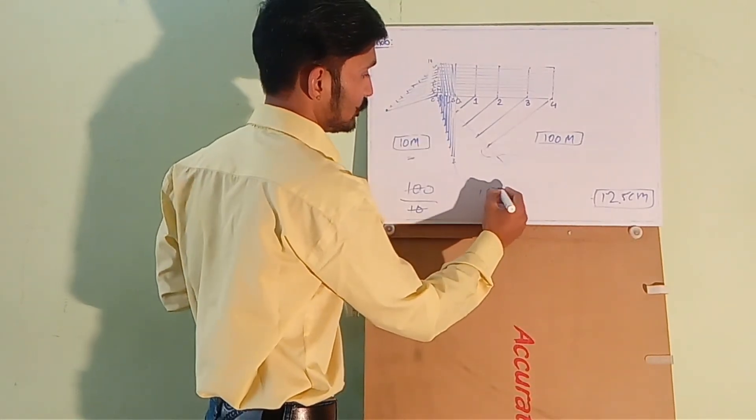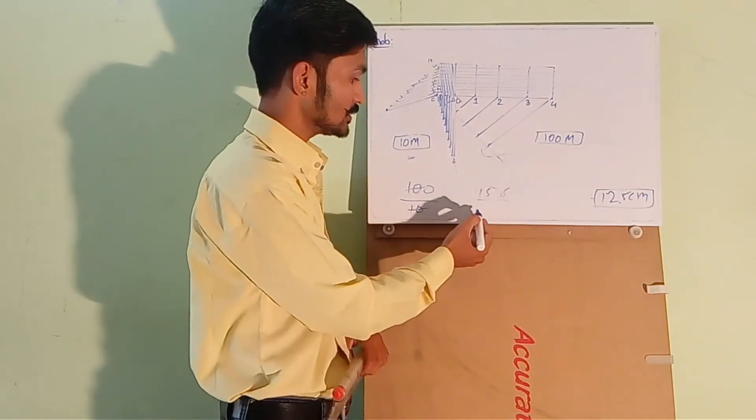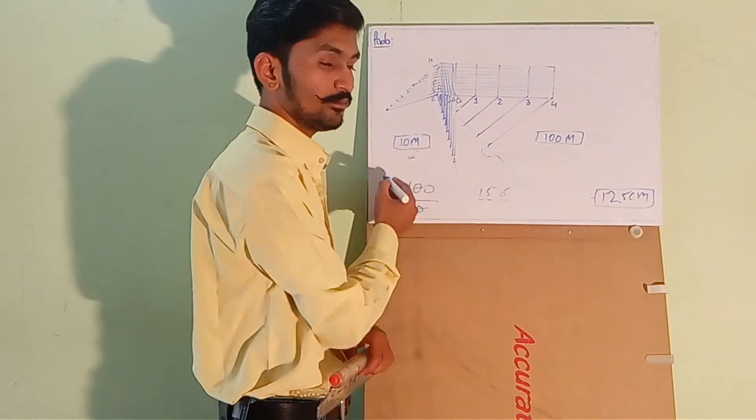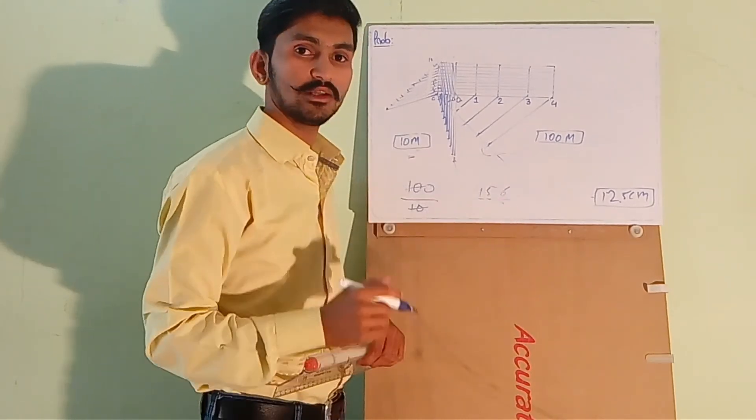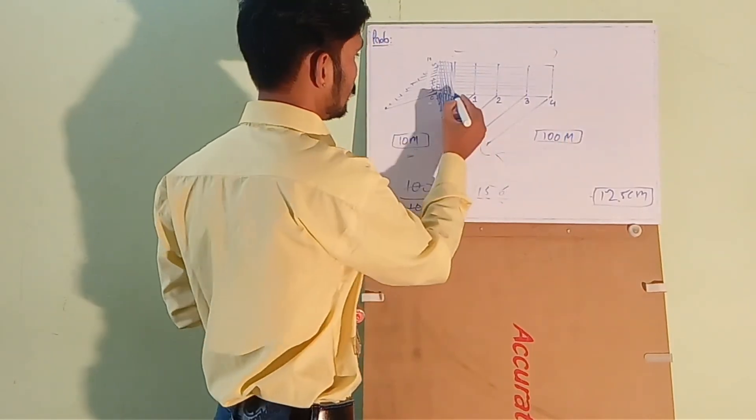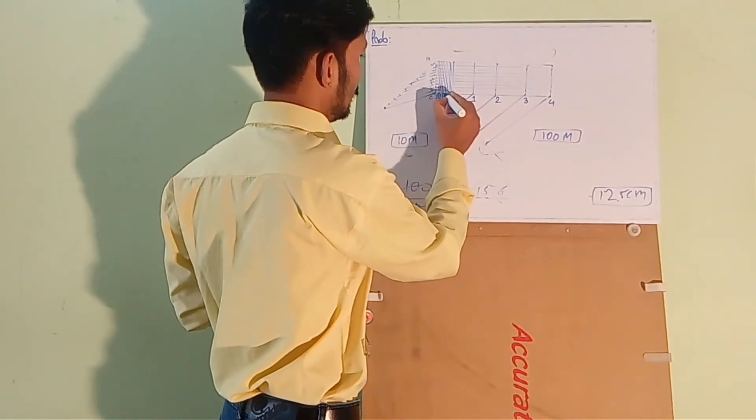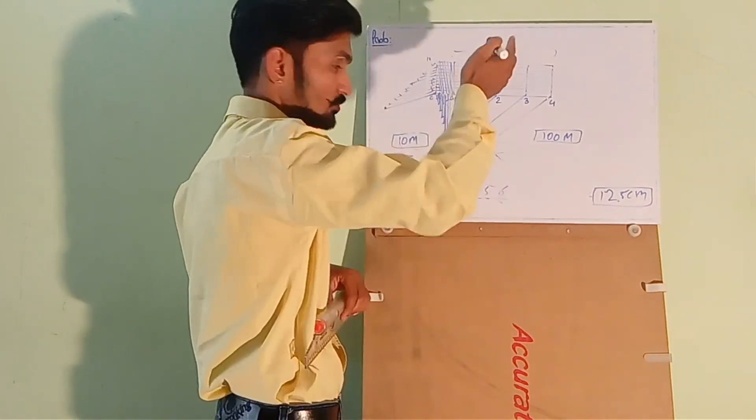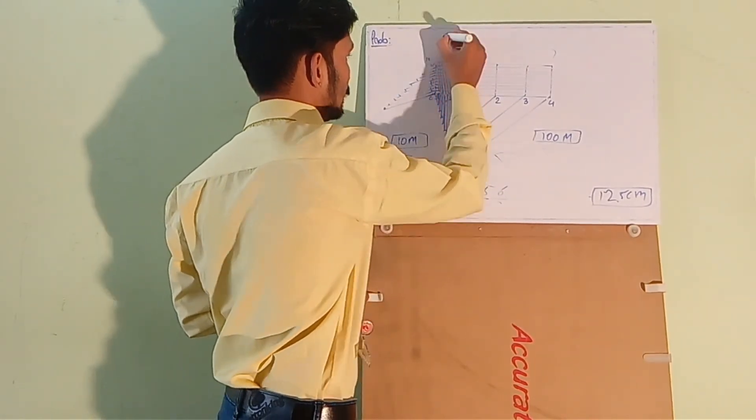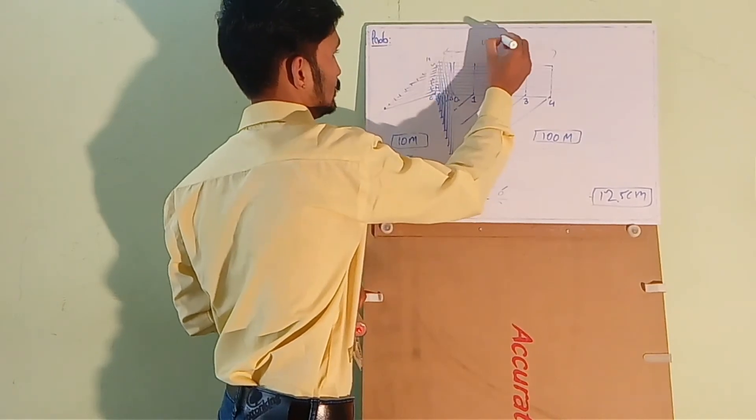Now we have to show 456 meters. It simply means 4 of 100 meters, 5 of 10 meters, and 6 of meters. 4 of meters count here, 1, 2, 3, 4. Then 5 of tens: 1, 2, 3, 4, 5. And 6 here: 1, 2, 3, 4, 5, 6. So, it will be here. This is 456 meters.